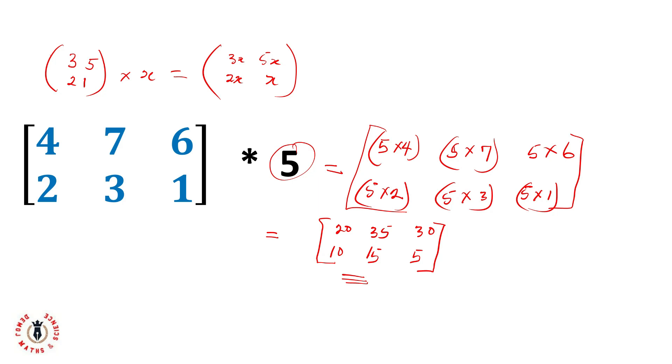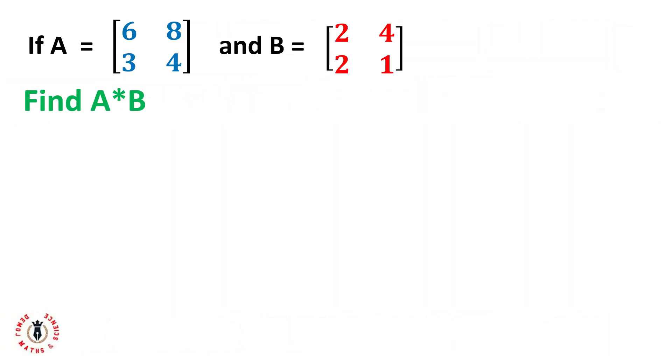Now let's see a common example for matrix multiplication. For matrix multiplication, one unique thing you must observe is that the number of columns must be the same as the number of the corresponding row. If matrix A is a 2x2 matrix and I'm multiplying it with matrix B, which is also a 2x2 matrix, you observe that the number of columns for matrix A is 2 and the number of rows for matrix B is also 2. So these two matrices can multiply each other conveniently.